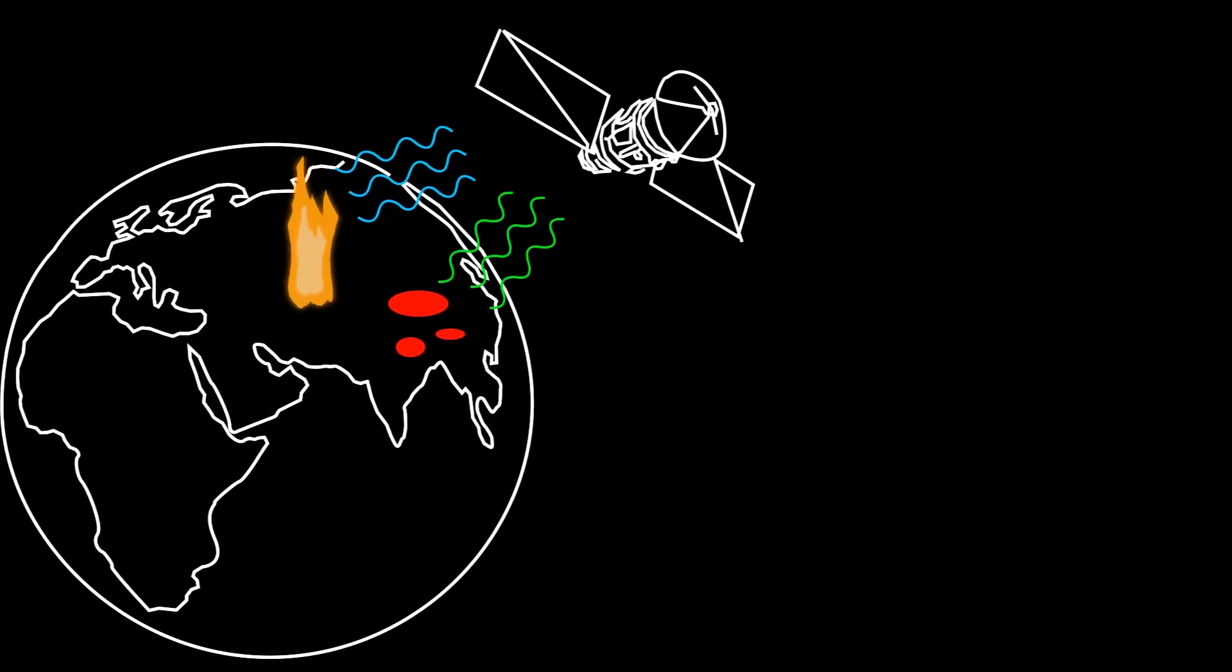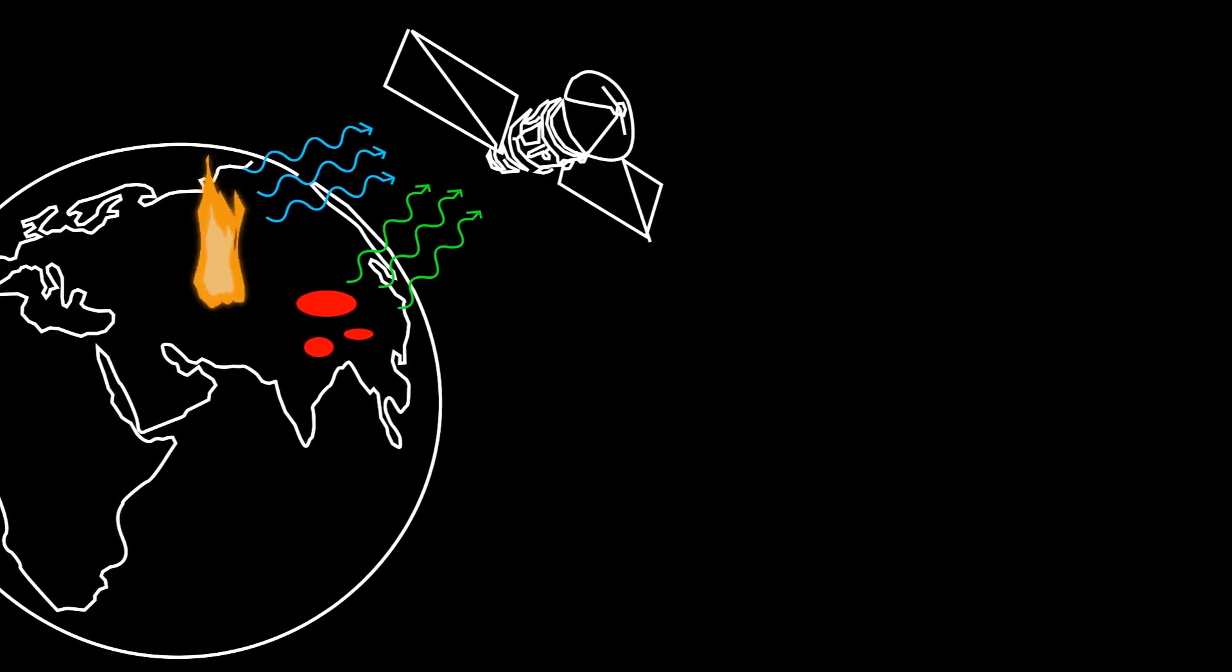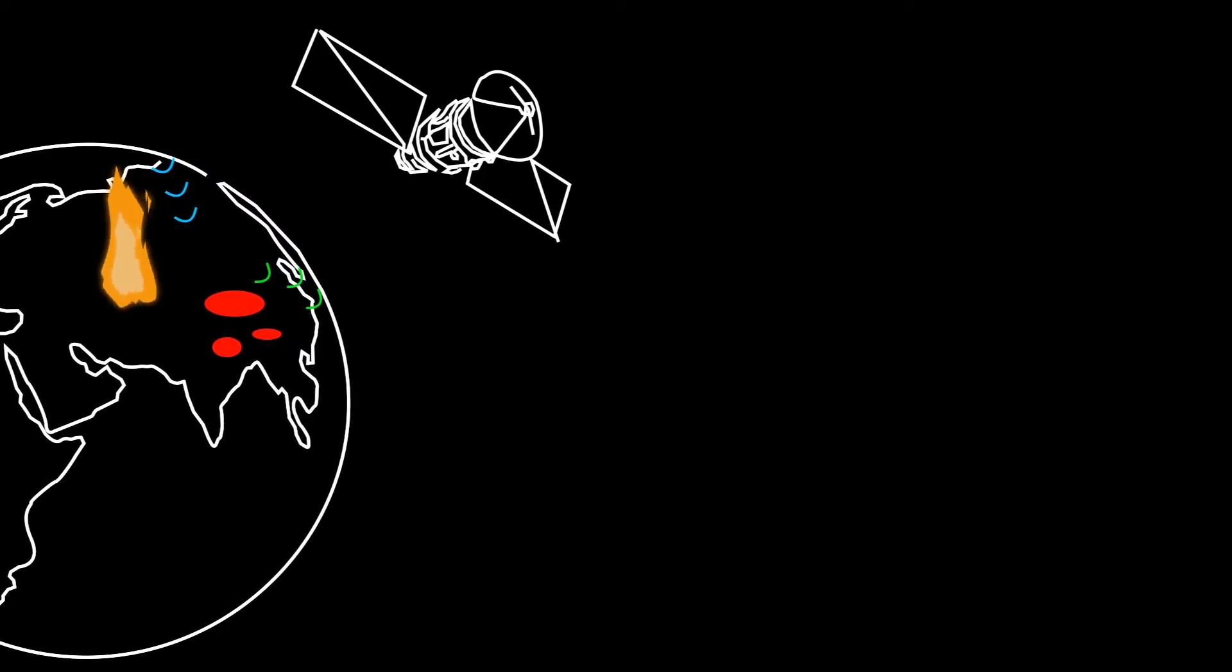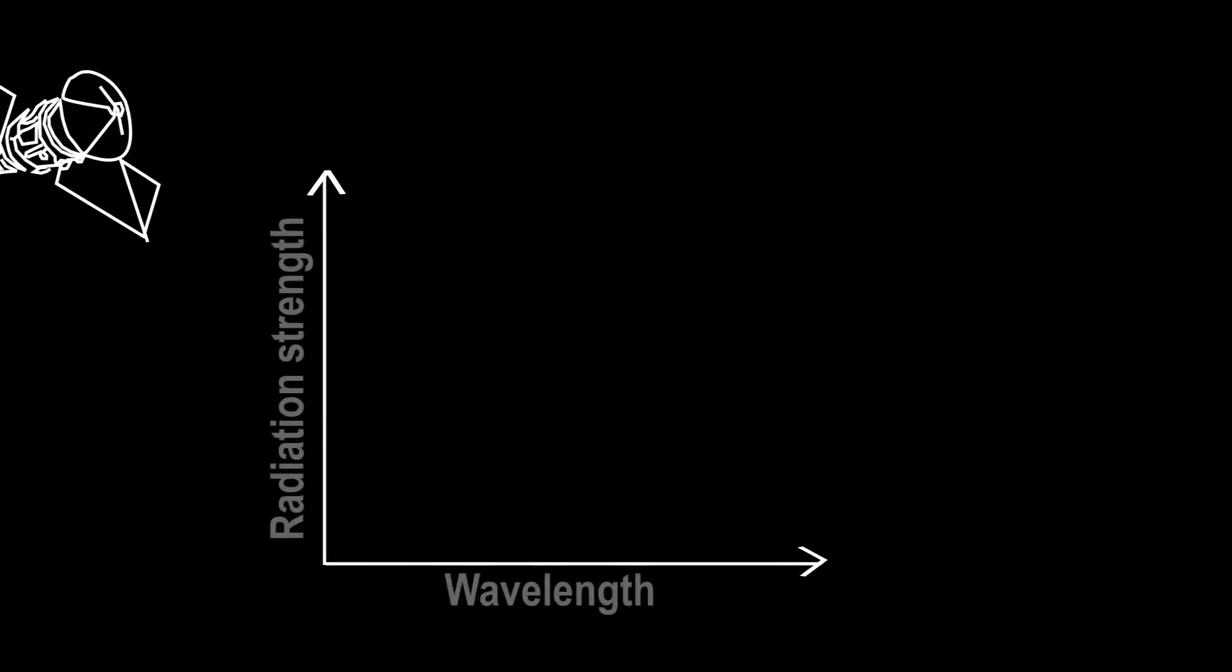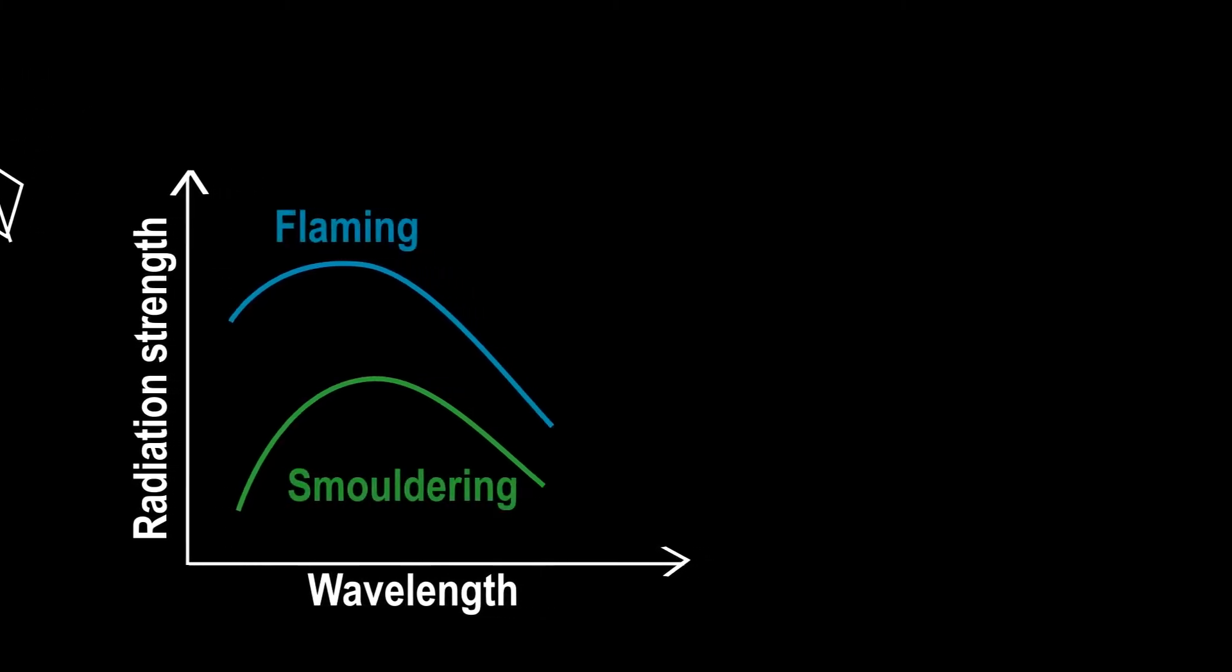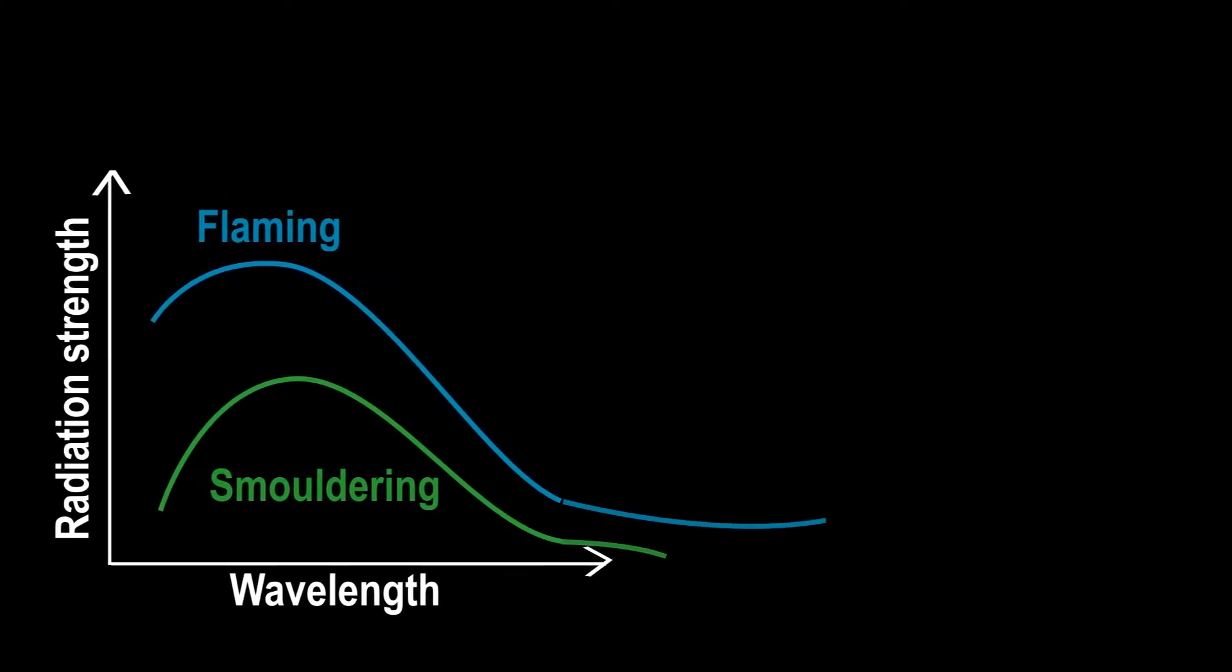To detect fires, the most common technology is via satellites which use infrared sensors. However, while the infrared signatures between flaming and smouldering radiation are different, the sensors cannot currently distinguish between flaming and smouldering fires.